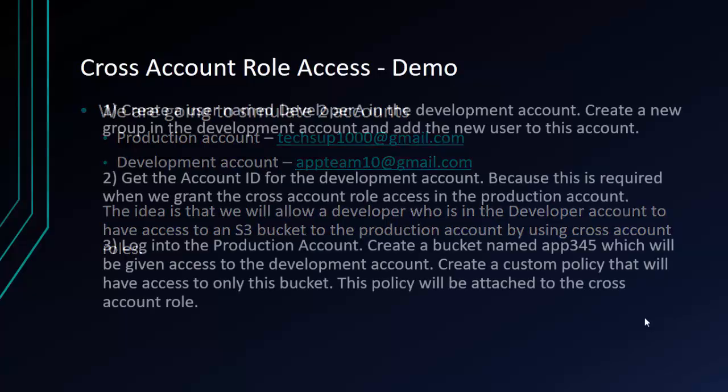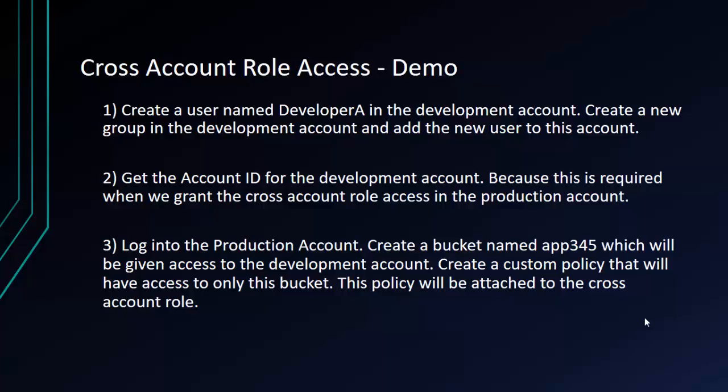Let's look at the steps. First, we're going to create a developer in the development account — we'll name it Developer A and attach it to a group. We need to ensure that we have the account ID for the development account, because this is required when we create the role in the production account. The user is in the development account, the S3 bucket is in the production account, and the role we need to create has to be in the production account. That role will have access to the S3 bucket, and the developer will then assume this role to access the S3 bucket.